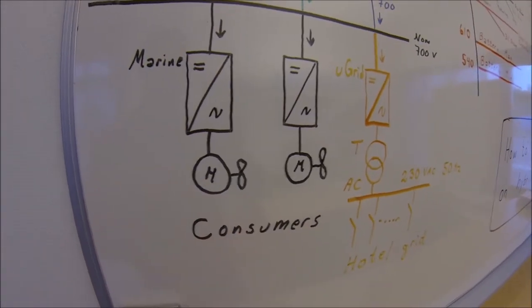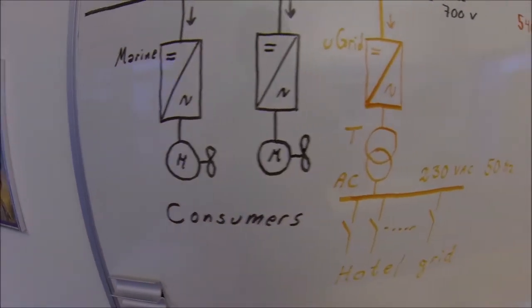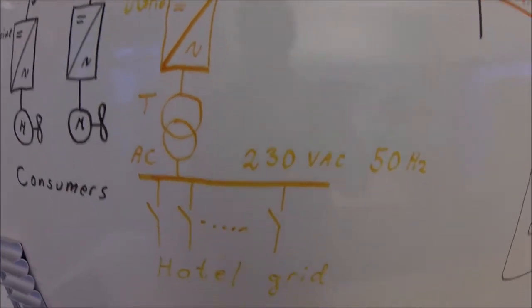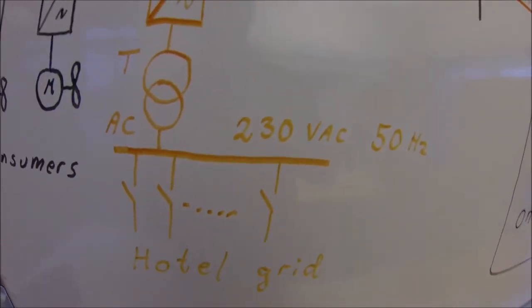Then you have the consumers, which can be heavy consumers, like propulsion systems. It could also be consumers like a grid for the hotel system.